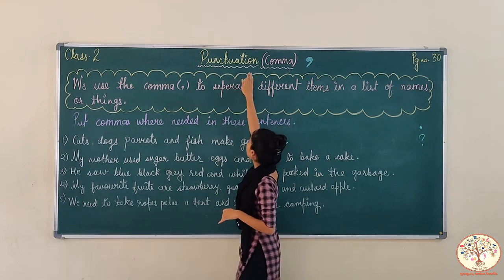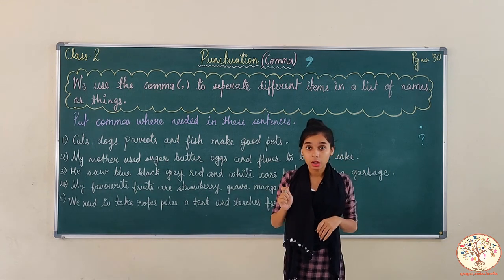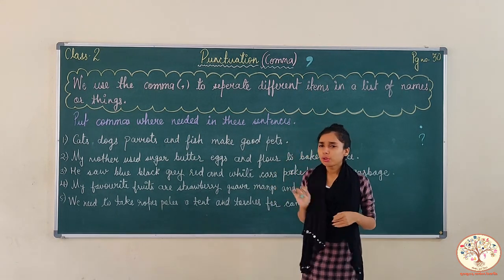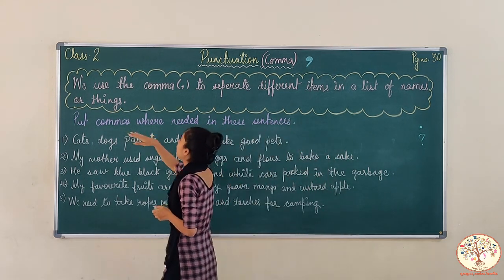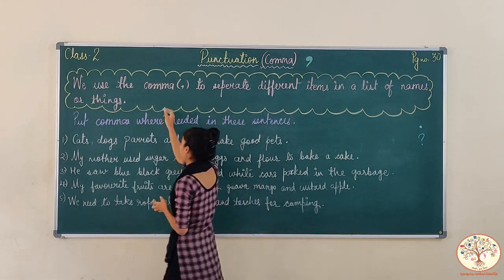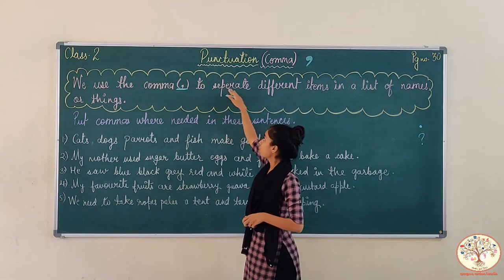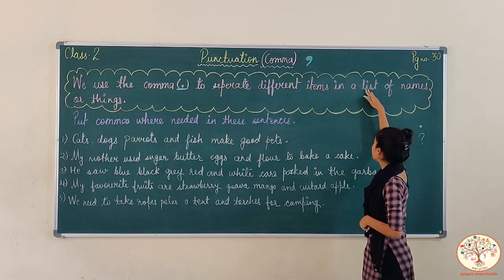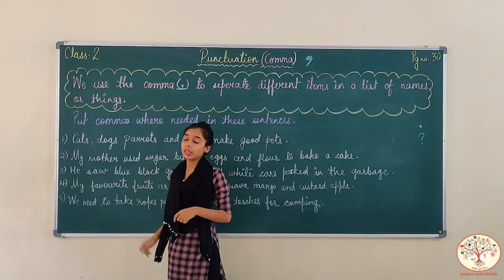So today we are going to know another punctuation — that is comma. Do you know where do we use comma? Let me tell you. We use the comma — how does comma look? Like this — comma — to separate two different items in a list of names or things.